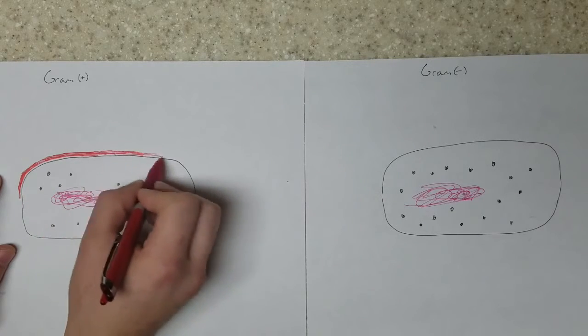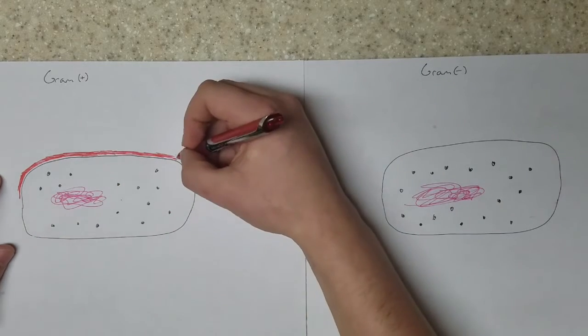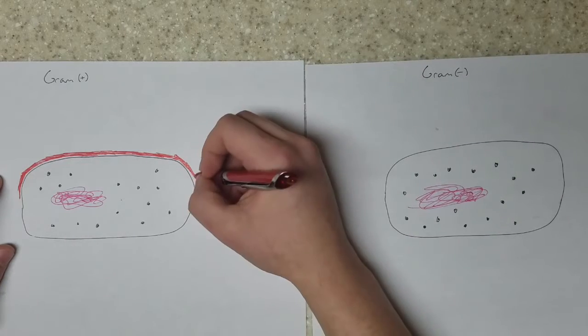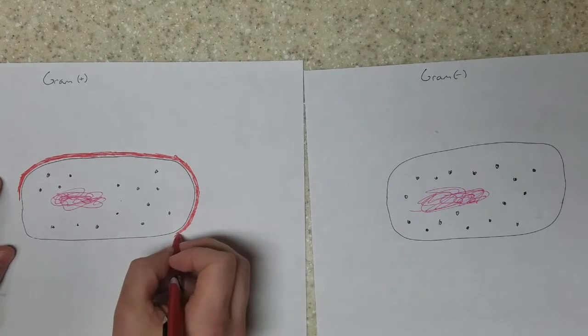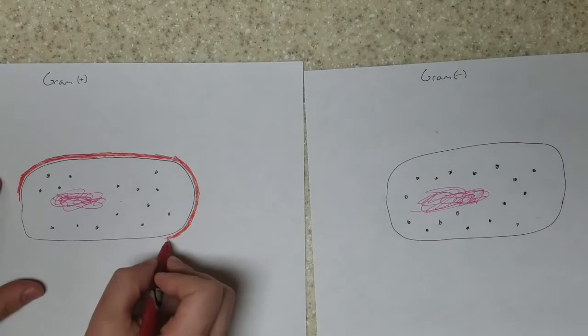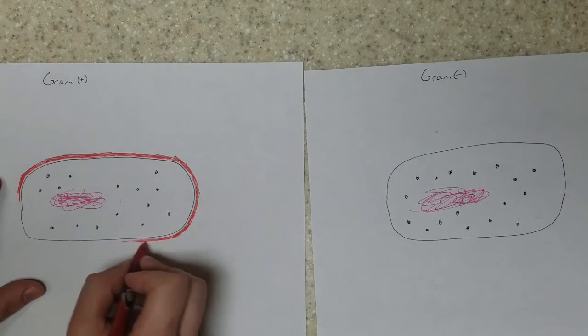And that actually causes the staining properties of gram-positive and negative bacteria. When you stain the bacteria with crystal violet and then wash it off later with alcohol, the alcohol dehydrates the cell wall and causes it to shrink around the cell.